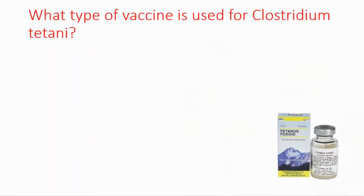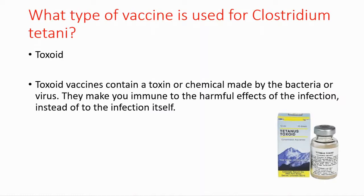What type of vaccine is used for Clostridium tetani? We use toxoid vaccines. Toxoid vaccines contain a toxin or chemical made by the bacteria or virus. They make you immune to the harmful effects of infection instead of the infection itself — they make you immune to harmful effects, not the whole infection.